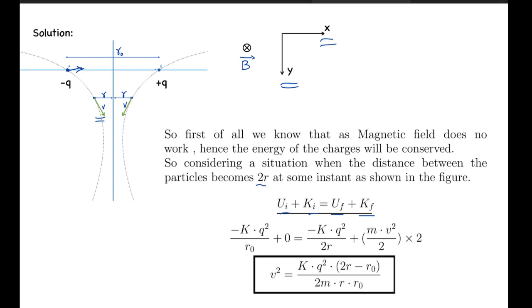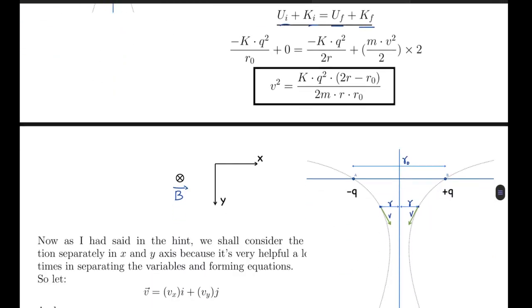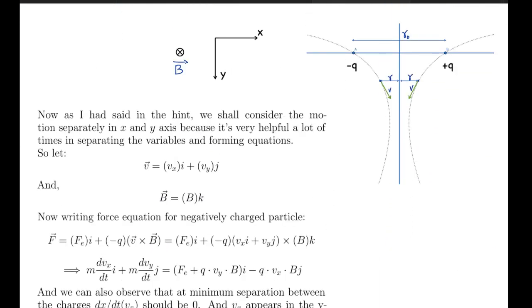From here, now as I said in the hint, we shall consider the motion separately in x and y axis because it is very helpful a lot of times in separating the variables and forming the equations. So let's assume v to be vx i cap plus vy j cap, and B to be B k cap. And here I have assumed v, this v to be for minus q.